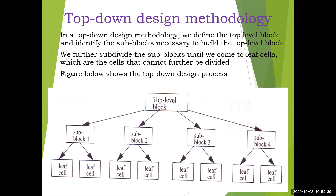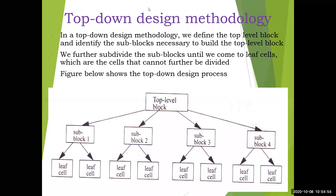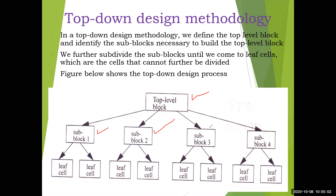In a top-down design methodology, as the figure shows, we define the top-level block and then identify the sub-blocks necessary to build it. In this example, four sub-blocks are identified, though it may be two, three, or any number. We then further subdivide those sub-blocks until we arrive at leaf cells — the level that cannot be divided any further. This is the top-down approach: from the top level down to leaf cells.